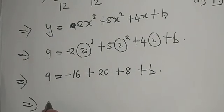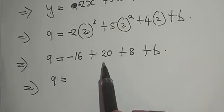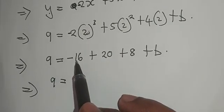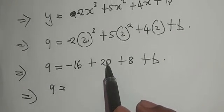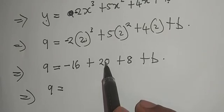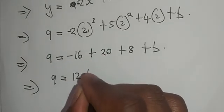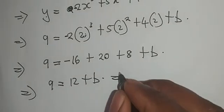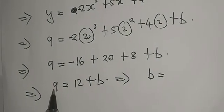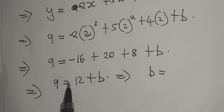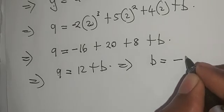Which in this case means that my 9 is equal to -16 + 20, that's 4, plus 8, that's 12, plus b, which in this case means that my b is equal to 9 - 12, which is equal to -3.